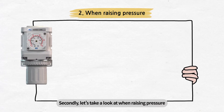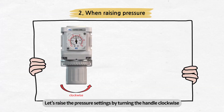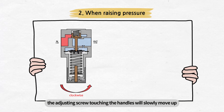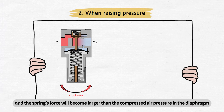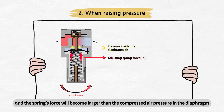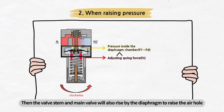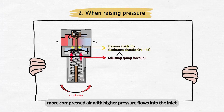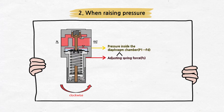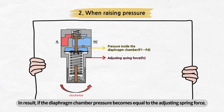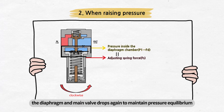Let's take a look at when raising pressure. Let's raise the pressure settings by turning the handle clockwise. By turning the handle clockwise, the adjusting screw touching the handle will slowly move up. Then, the adjusting spring will compress and the spring's force will become larger than the compressed air pressure in the diaphragm chamber to raise the diaphragm. Then, the valve stem and main valve will also rise by the diaphragm to open the air hole. As the air hole becomes more open, more compressed air with higher pressure flows into the inlet. Then, the pressure at the outlet and diaphragm chamber gradually rises again. If the diaphragm chamber pressure becomes equal to the adjusting spring force, the diaphragm and main valve drop again to maintain pressure equilibrium.